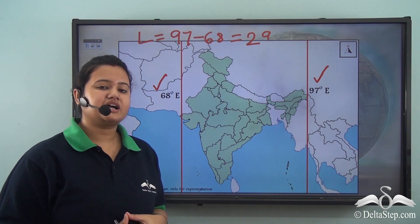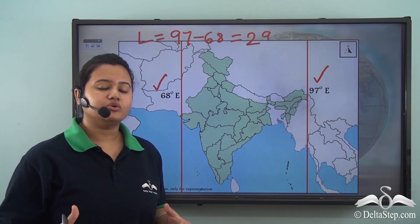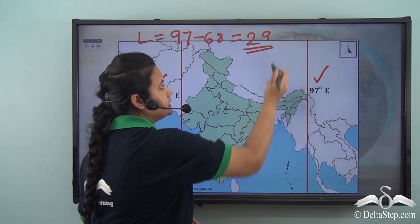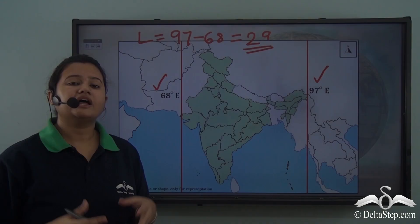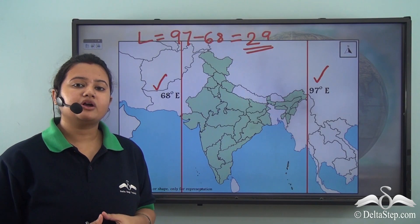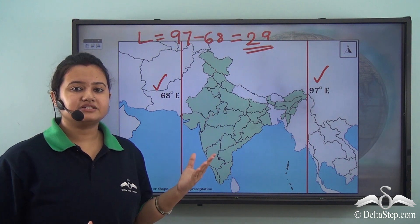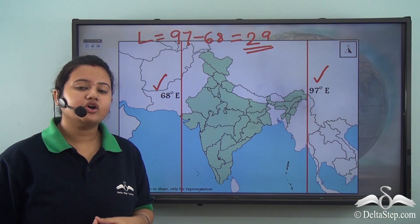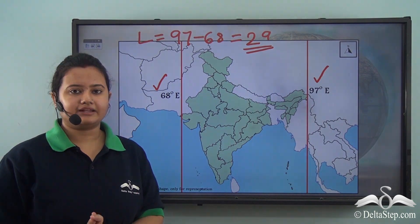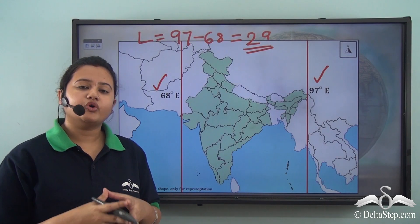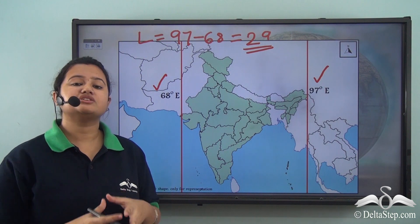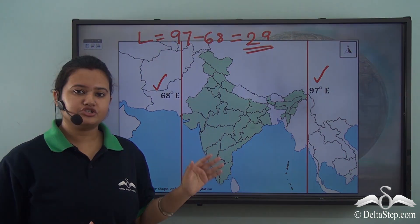If every place in this country follows their own local time, then there will be 29 local times in total. Now this will create too much confusion because while traveling across states, you will have to adjust your watch constantly. So in order to avoid such confusion, a uniform time is followed throughout the country.